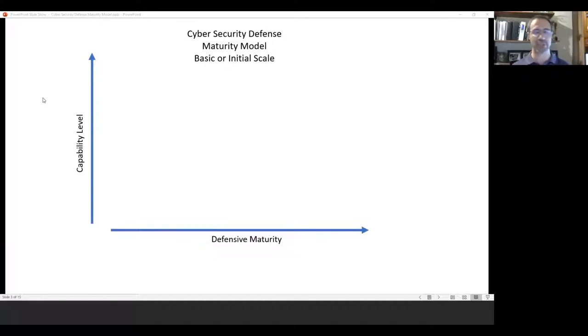So with that said, let's get into the guts of this conversation. And basically what you're seeing here on the screen is a graph. What I'm going to talk about is what I've termed the cybersecurity defense maturity model. And today, the first part, I'm going to go over the basic or initial scale. The idea of this model is to graph the capability of a technology with its defensive maturity. Now, granted, there is room for debate on this.